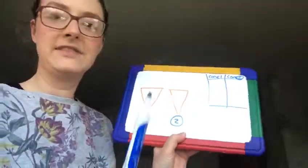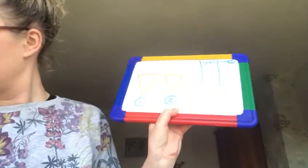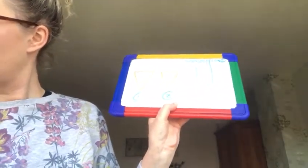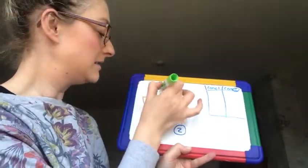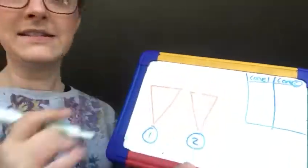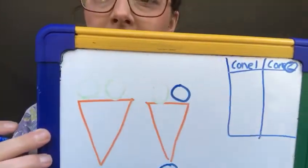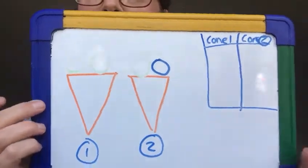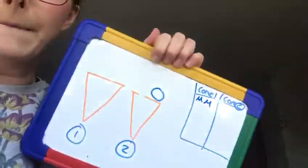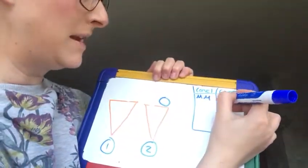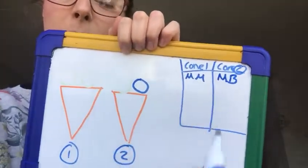Okay, so the ice cream flavors are blueberry, strawberry, and my favorite, mint. So the first one I'm going to do is mint mint, and then mint and blueberry. Okay, and then I'm going to record that in my table. So cone one has got mint mint, which is M-M, and cone two has got mint blueberry, which is M-B. Okay, so I've got two combinations.